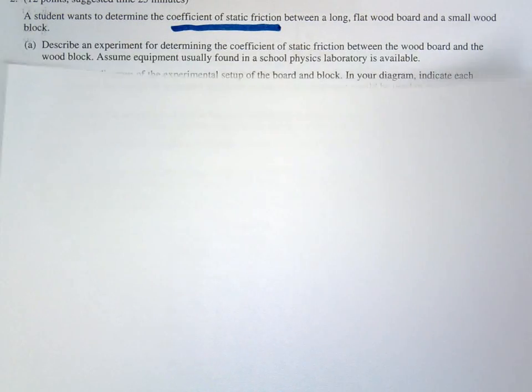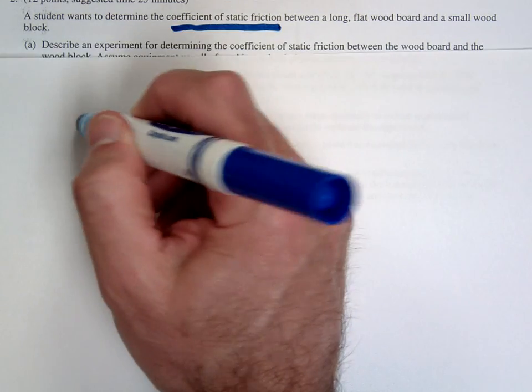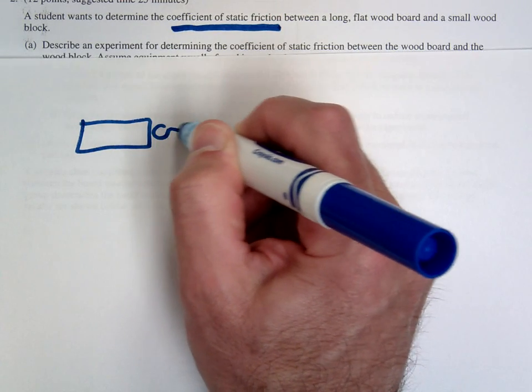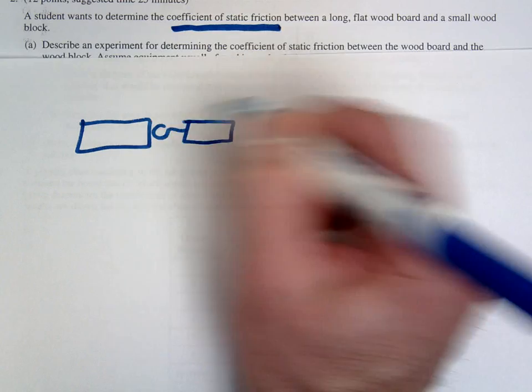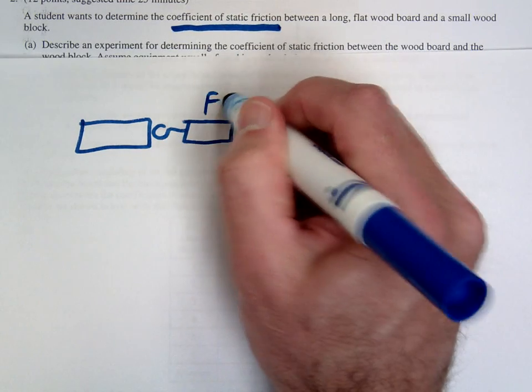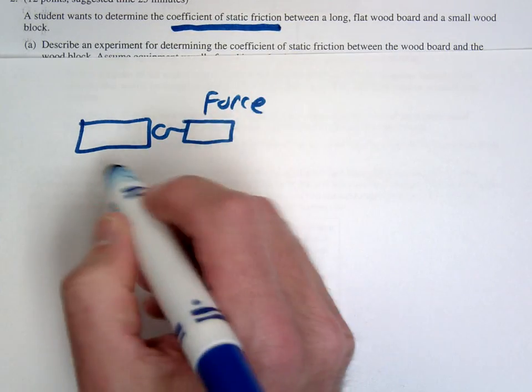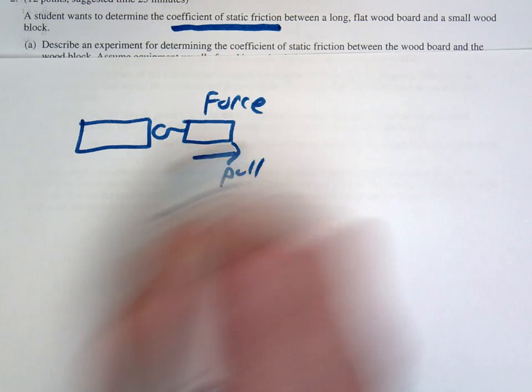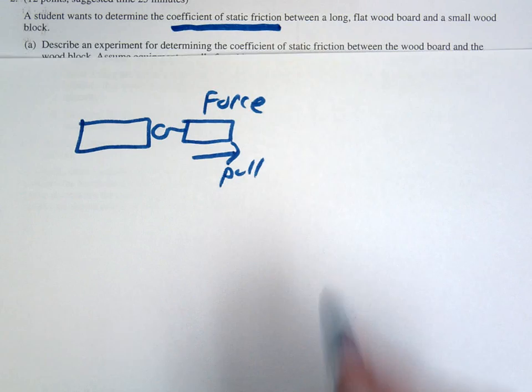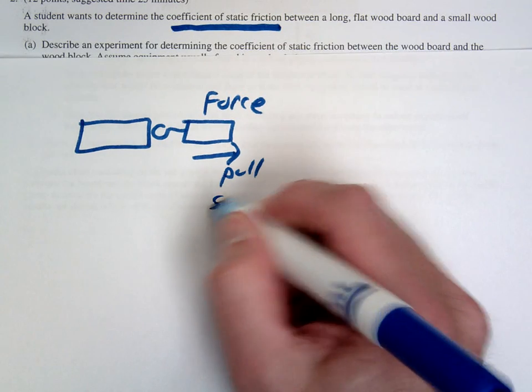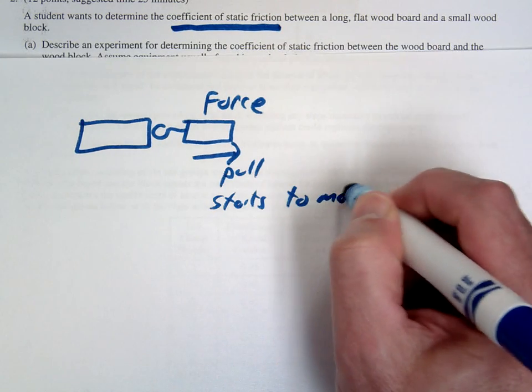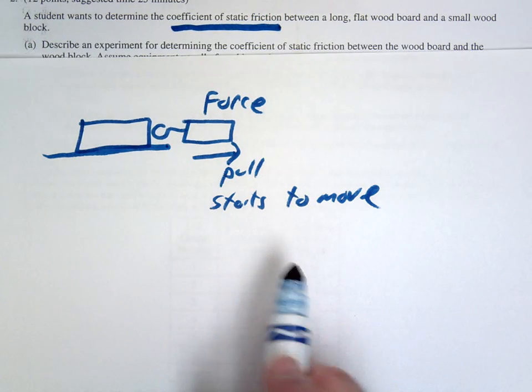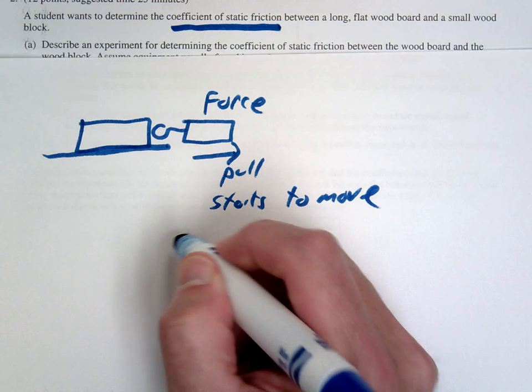There's several experiments you could do. I think the most straightforward one would be to have a block and attach some kind of force meter or spring scale, something that's going to be able to measure the force. Basically what you're going to do is slowly pull on the block until the block just starts to move. And when it just starts to move you're going to record the force. And what that force is going to be is the force of static friction.